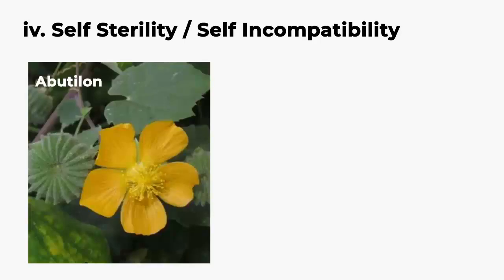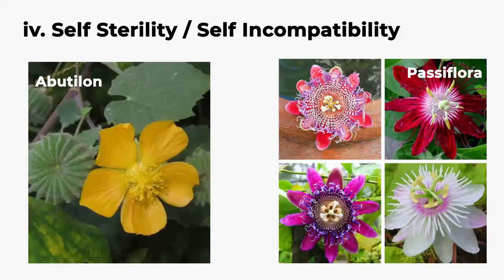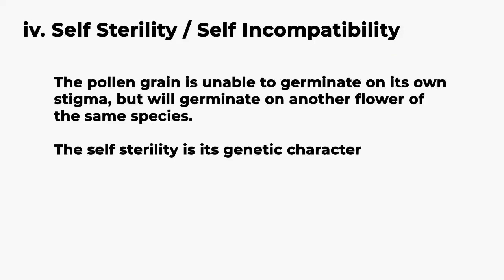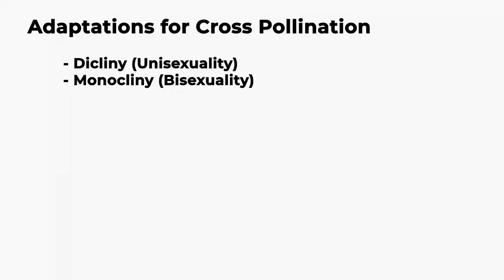Examples of self-sterility: Abutilon and Passiflora. The pollen grain of a flower is unable to germinate on its own stigma, but it can germinate on the stigma of other flowers of the same species. So here also self-pollination is prohibited. The self-sterility is a genetic character.